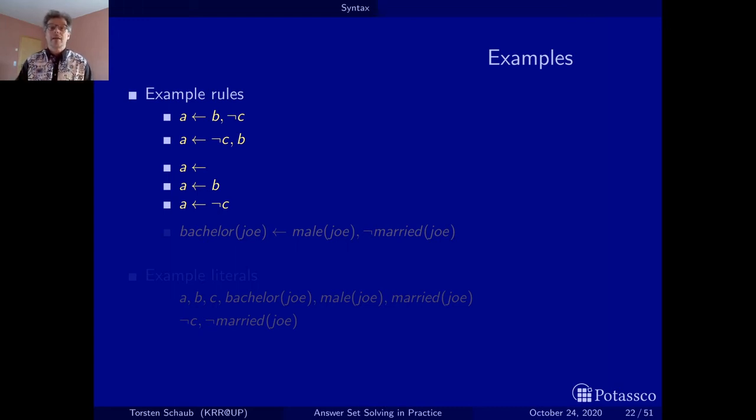Here are some easier examples, but also of some interest. This rule here is also called a fact because it has no conditions, the body is empty. So a holds no matter what other conditions are satisfied. And normally, when you write this in the modeling language of an ASP system, this is written just with a dot at the end, and the conditional is dropped. But we use this to emphasize that it's nonetheless a rule and not just an atom. Then the next rule, a if b, has no negative body literals, hence this is a positive rule, just as a fact is also a positive rule.